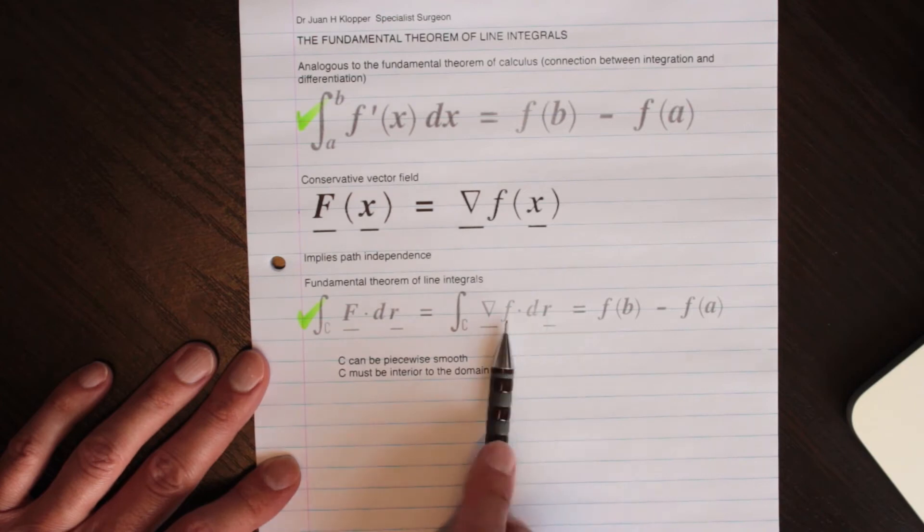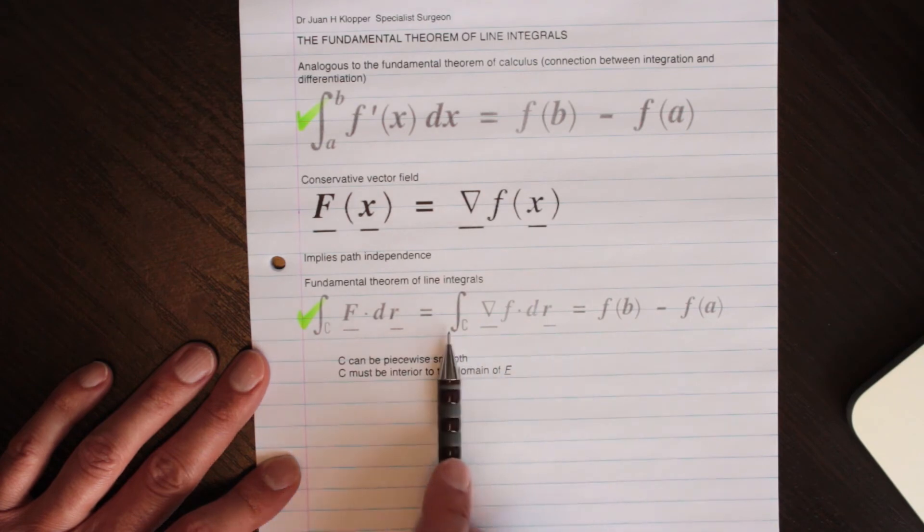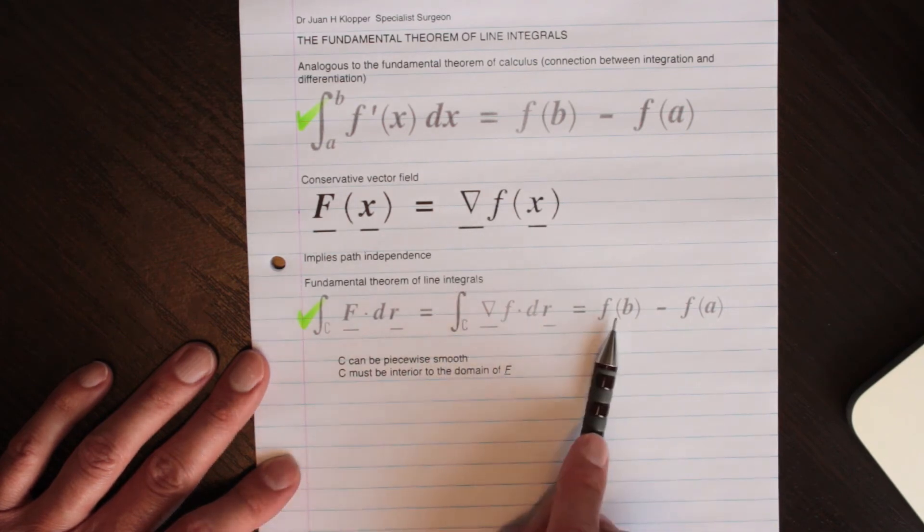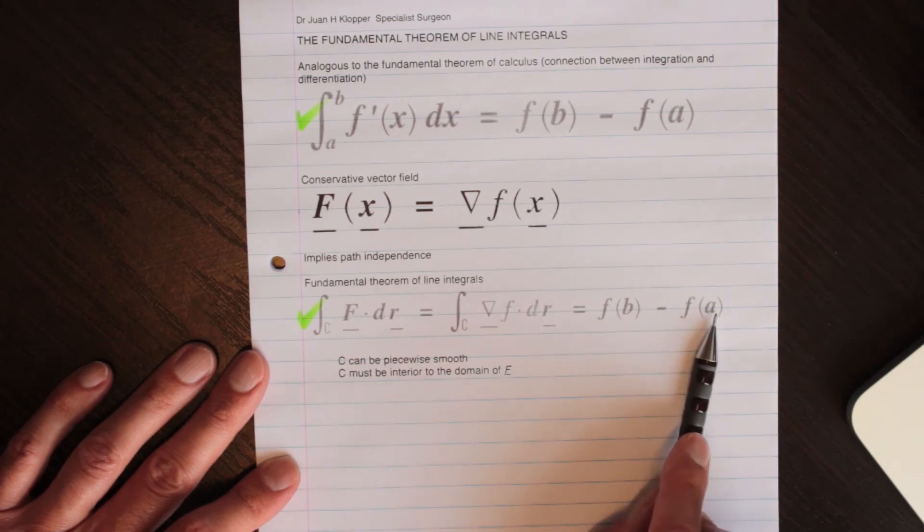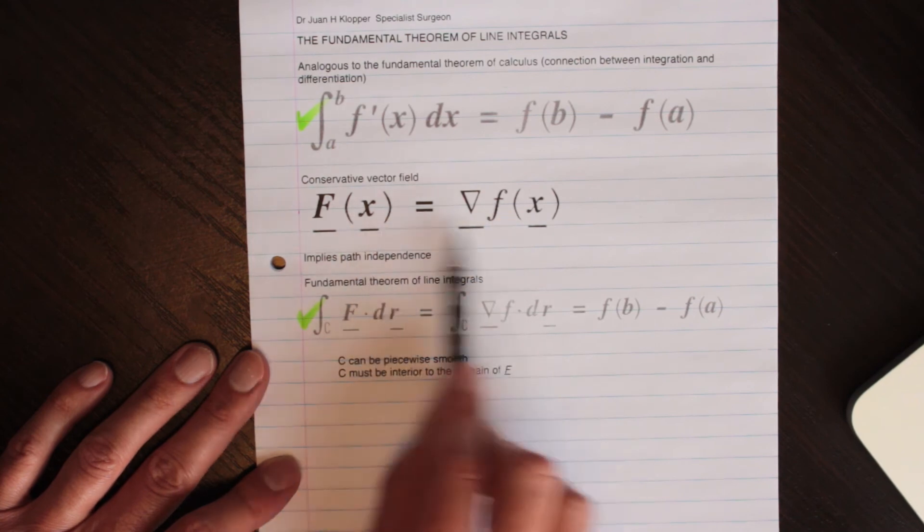That just equals this function at b minus this function at a, in other words I should have written a and b there, or could have written a and b there, so from some, and there's the final point and the initial point.